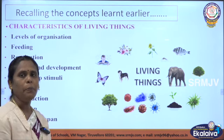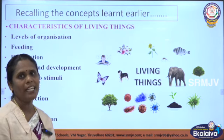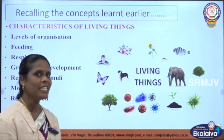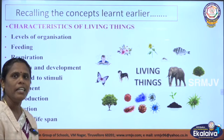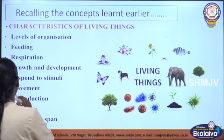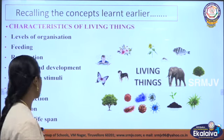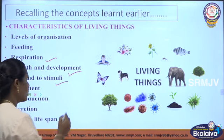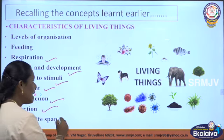We discussed in Part 1 that things around us can be broadly categorized into living and non-living things. In Part 1, we discussed three characteristics: levels of organization, feeding, and respiration. In Part 2, we discussed the remaining characteristics of living things: respiration, growth and development, response to stimuli, movement, reproduction, excretion, and definite lifespan.